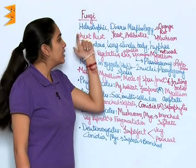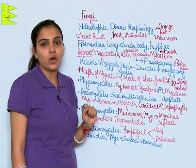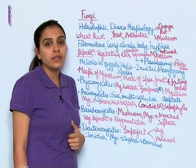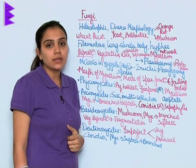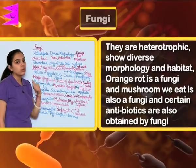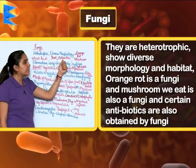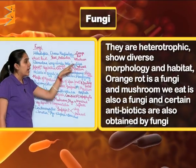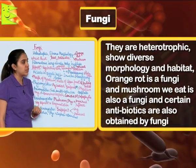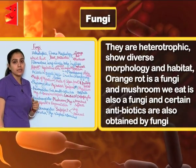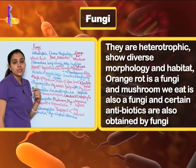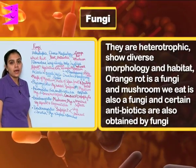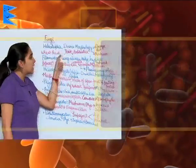Kingdom Fungi: these are usually heterotrophic organisms, and as they develop on decaying or dead matter they are also known as saprophytes or parasitic organisms. They show diverse morphology — the rotting orange we have seen is also fungi, the mushroom you eat is also fungi, wheat rust is also a fungi, and yeast used in making cakes and beer is also fungi. We also get antibiotics from fungi.